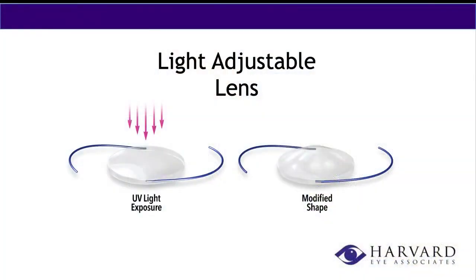With the toric lens, you'll just need reading glasses for up-close work. The light adjustable lens is quickly becoming one of my favorite lenses, mainly because I see how happy the patients who are getting it are. Unlike any of the other lenses, the light adjustable lens is the only lens on the market that we can actually change the prescription of after it's been implanted during cataract surgery.